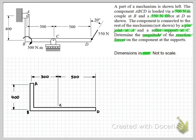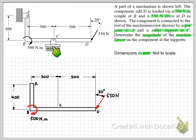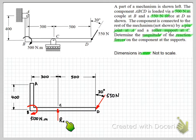Let's start by putting on the forces that we know — the loads given in the question. We have our 550 N force acting at 30 degrees to the vertical, and we also have a moment applied at B. Then we consider the forces applied to the beam by the supports. Looking at the roller support at C, it can move freely in the horizontal direction but provides a constraint preventing movement in the vertical direction, so we have a single vertical force RC representing that constraint.